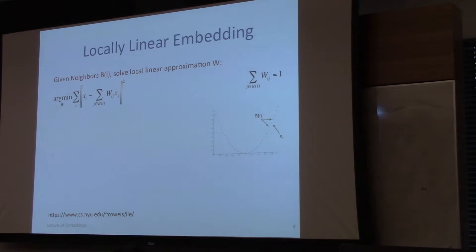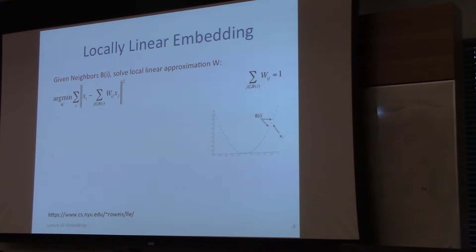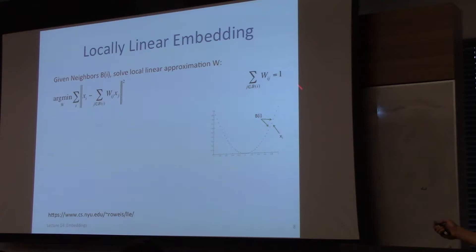Given the set of neighbors for every data point in our training set, step one is to find the best convex combination reconstruction of each data point as a convex combination of its neighbors. Under the squared loss of the original high-dimensional feature representation, this is the objective: find the W matrix that minimizes the reconstruction error of each X_i given some convex combination of its neighbors, subject to the constraint that the coefficients sum to one.